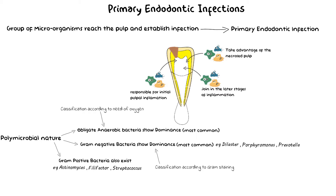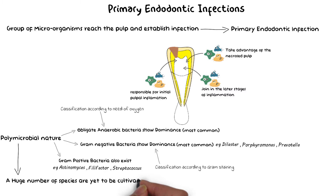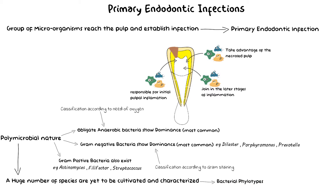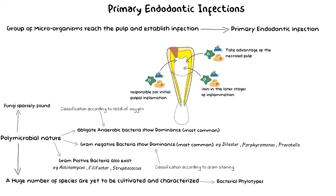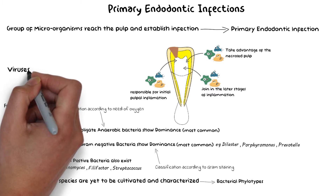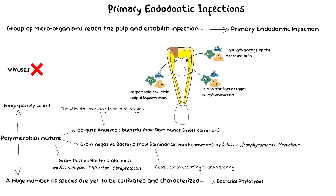Still, the bacterial species discussed represent only a relatively smaller portion, and a huge number of bacterial populations are yet to be cultivated and characterized — these are known as bacterial phylotypes. Other than bacteria, fungi are also very sparsely found in primary endodontic infections. On the other hand, viruses don't occur in necrotic pulp, as viruses require a living tissue to reproduce and metabolize; they have sometimes been reported in vital pulps but not in necrotic pulps.